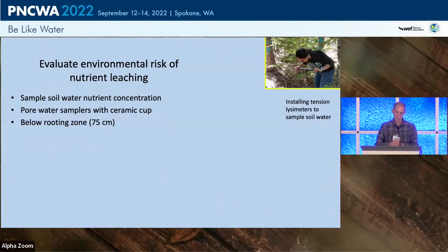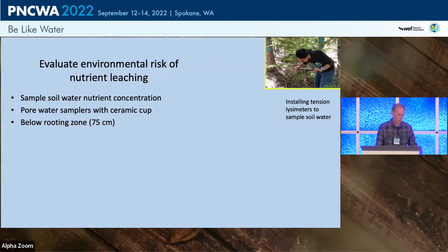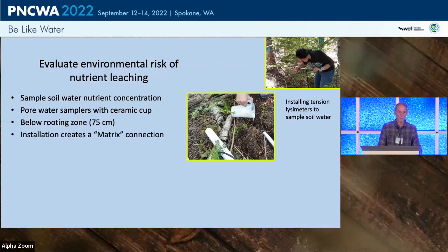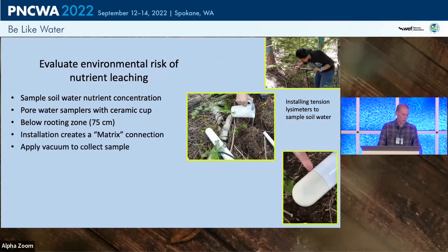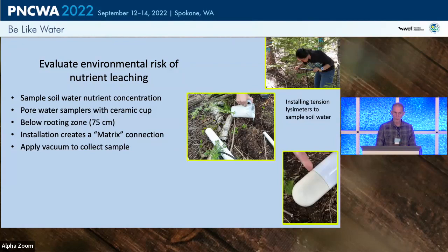To measure nutrient concentration of soil water, we used tension lysimeters — here's Eureka drilling to 75 centimeters with an auger. After preparing the hole, we poured in a silica flour slurry and quickly inserted the ceramic cup of the tension lysimeter at 75 cm depth, creating a strong matrix connection with the soil water. We applied a vacuum monthly and collected samples the next day for nutrient analysis.